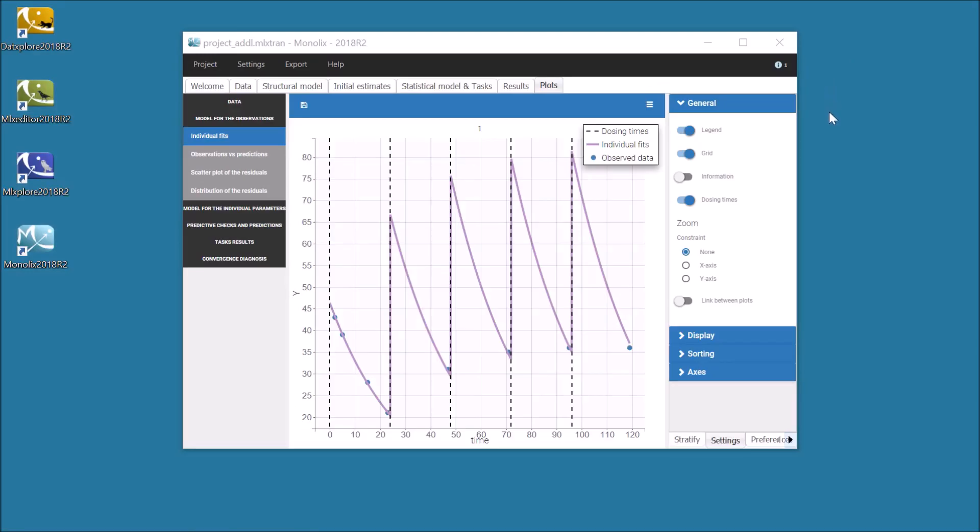Let's begin with an example. Here, an individual receives 5 bolus doses every 24 hours from time zero with some observations after the first dose and one observation just before each of the other doses.